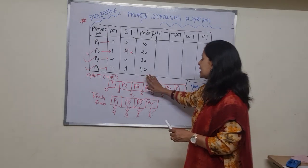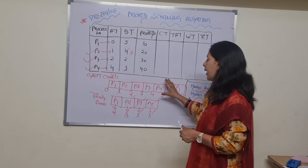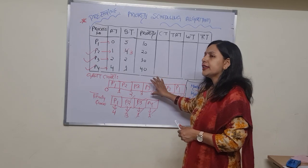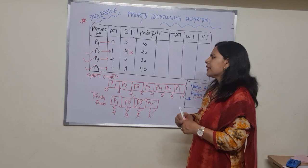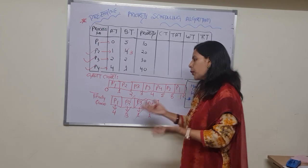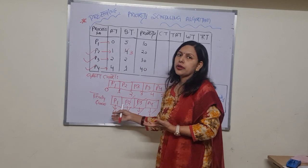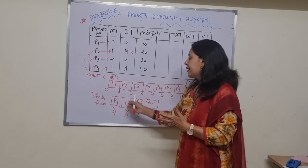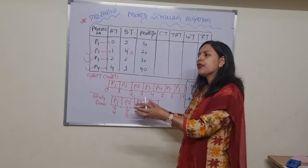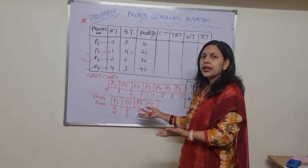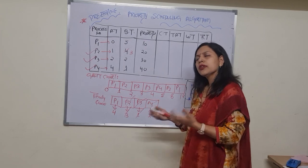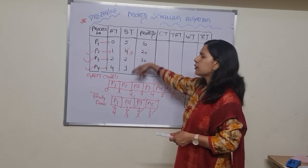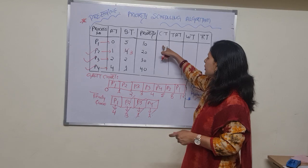So this is the Gantt chart. In the exam you must draw this Gantt chart, because only with it can you determine the completion time. Maintaining a ready queue is optional here — unlike round robin scheduling where it is mandatory. I'm creating it for my own understanding, but you can skip it if you prefer.